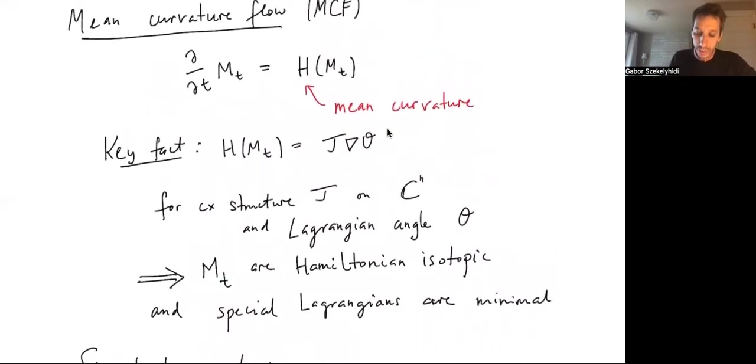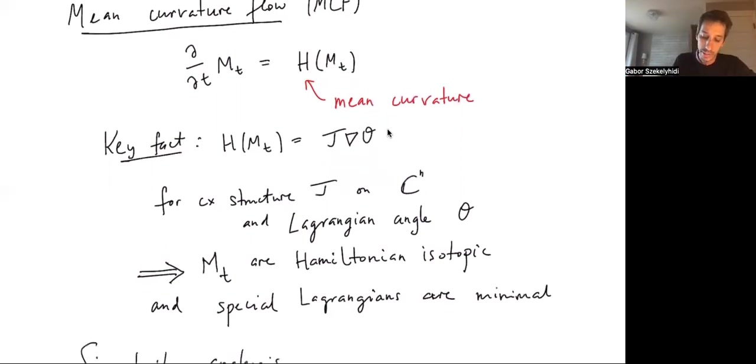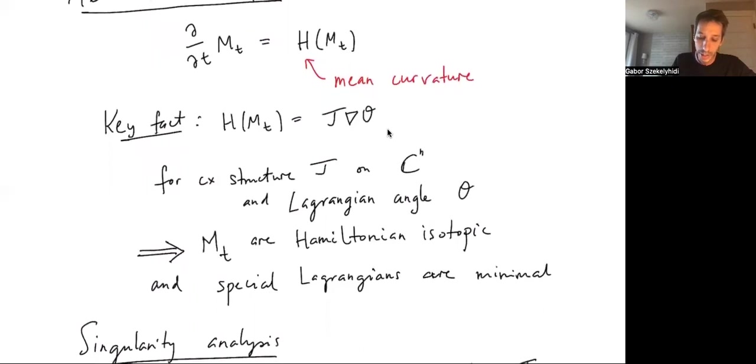This has two consequences. First of all, it says that the mean curvature flow by this formula is evolving M_t in this direction, J∇θ. But these are exactly what Hamiltonian isotopies are generated by, these kind of vector fields deforming the submanifold. So this formula tells us that all the M_t's will be Hamiltonian isotopic.